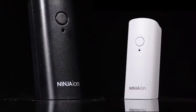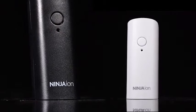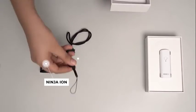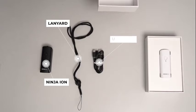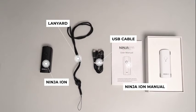Ninja Ion has two available colors, black and white. Each box includes one piece of Ninja Ion, one Ninja Ion manual, one piece of lanyard, and one piece of USB cable.